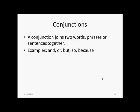A conjunction — the next part of speech — is something which joins two words, phrases, or sentences together. Typical examples include words like and, or, but, so, and because.